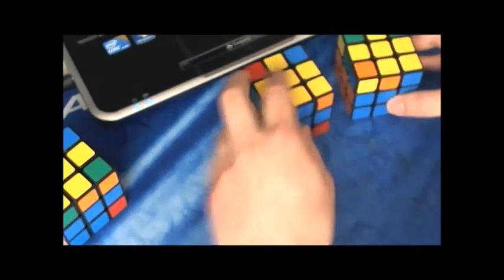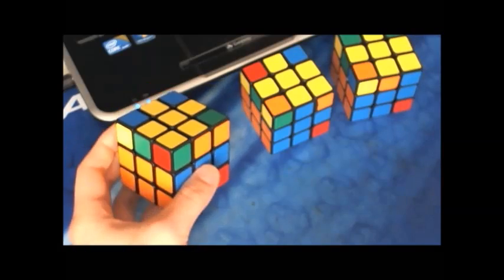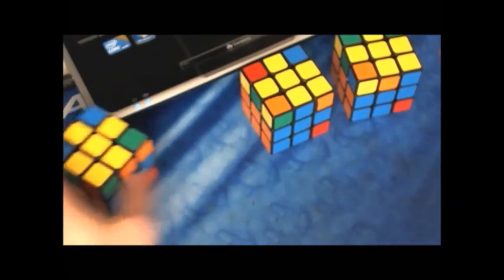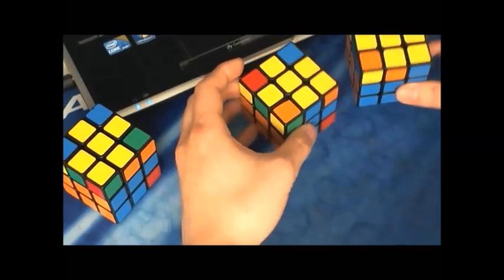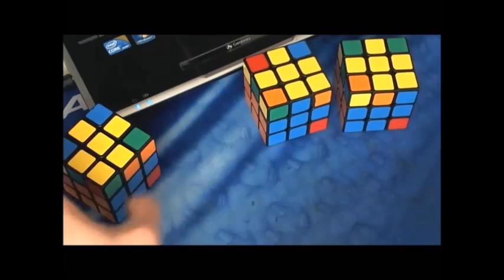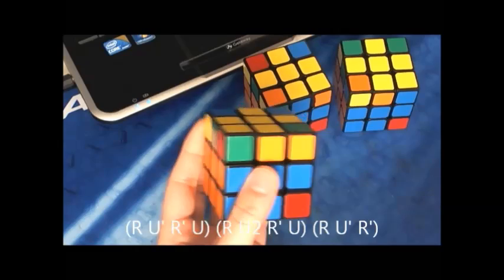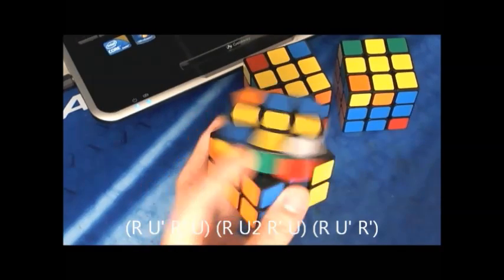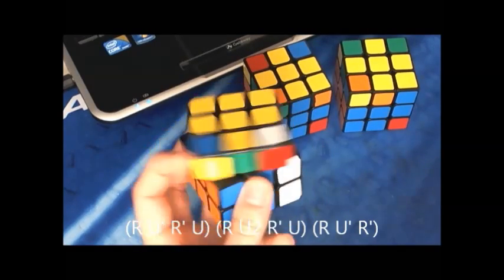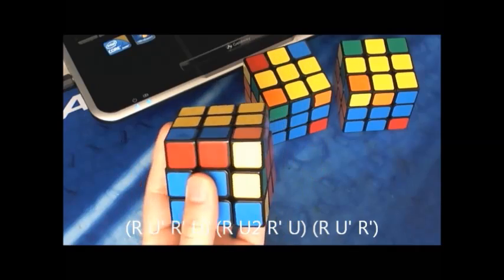To sum it up, the one that resembles the regular insertion is just a regular insertion. And the other two have very simple, easy pair insertions after four moves. So let's take a look at the regular insertion first. So what I would do is R U' R' U, and then finish off with R U2 R' U and then insert the pair.